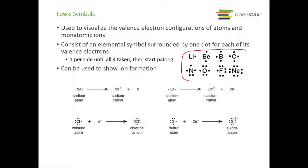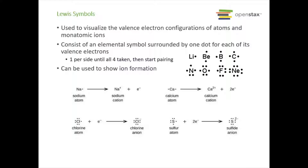Here are some examples of Lewis symbols for simple atoms. Lithium has one valence electron so it has one dot, and you can put it on any side — it doesn't matter. Beryllium has two valence electrons, and it doesn't matter how you arrange them as long as there are two dots on separate sides. Boron has three, carbon has four. Nitrogen has five valence electrons, so we start with one dot per side and then pair the extra one. Oxygen has two pairs and two lone electrons, fluorine has three pairs and one electron, and neon has the full valence shell — the noble gas configuration with eight valence electrons.